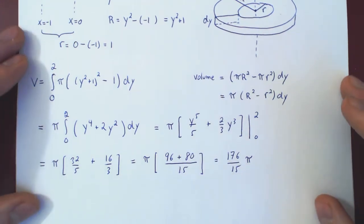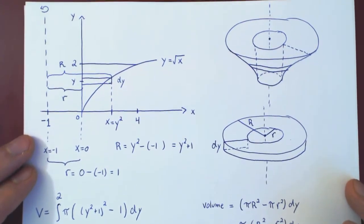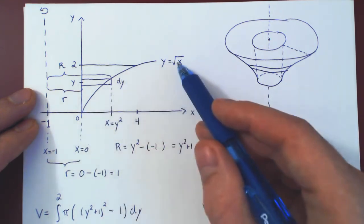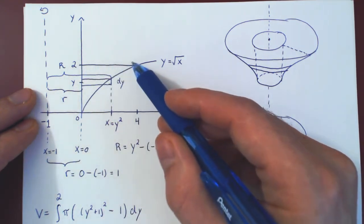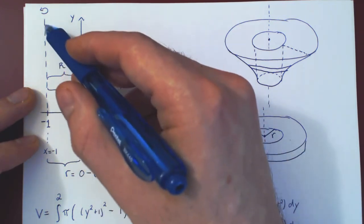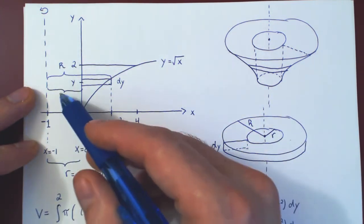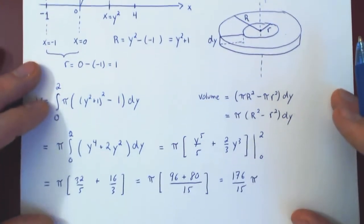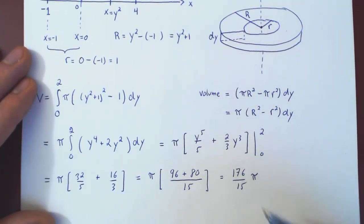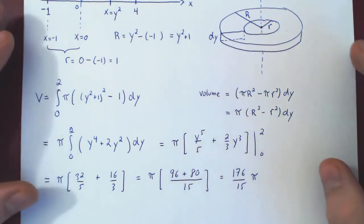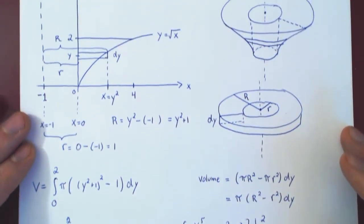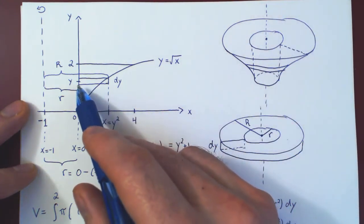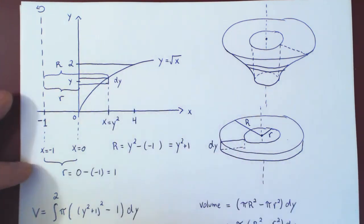So our conclusion is: the region in the first quadrant of the xy-plane bounded by y equals root of x, the y-axis, and y equals 2, when revolved about the vertical line x equals negative 1, produces a solid of revolution whose volume is exactly 176 over 15 times pi units cubed. In the next video, we will find the volume of the same solid using vertical rectangles instead.